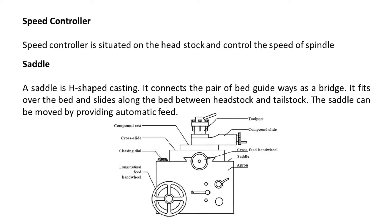Saddle. A saddle is an H-shaped casting. It connects the pair of bed guideways as a bridge. It fits over the bed and slides along the bed between the headstock and tailstock. The saddle can be moved by providing automatic feed.